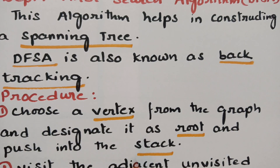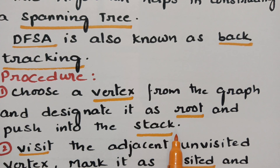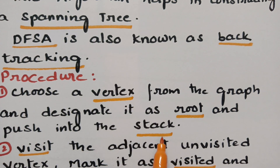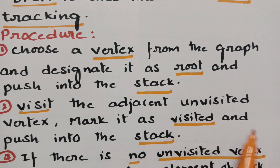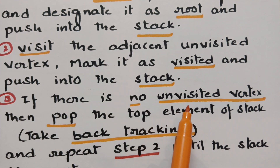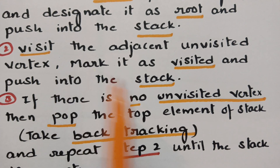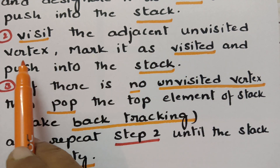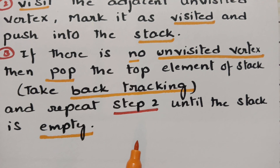The procedure is: first, choose a vertex from the graph, designate it as the root vertex, and push it into the stack. Next, visit the adjacent unvisited vertex, mark it as visited, and push it into the stack. Third, if there is no unvisited vertex, pop the top element of the stack, take backtracking, and again repeat step 2 — visit the adjacent unvisited vertex, mark it as visited, and push it into the stack — until the stack is empty. That gives you a spanning tree.